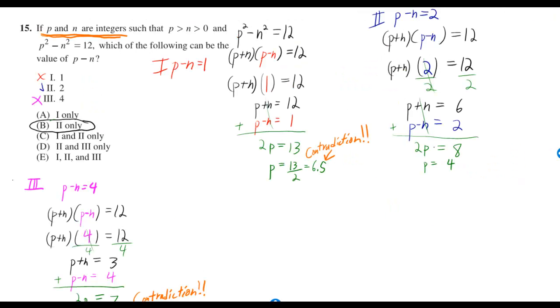And by the way, you should also check to make sure that n is an integer. But if p is equal to 4, then you go to your equation right here, p plus n is equal to 4. And you just plug in 4 into that. And from that, you can realize that n is equal to 2, which is an integer as well.